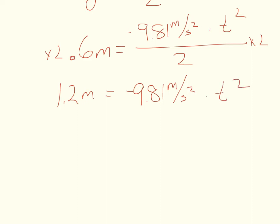And then to get rid of this 9.81 meters per second squared I have to divide both sides by negative 9.81 meters per second squared.